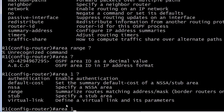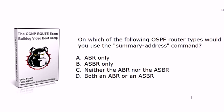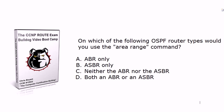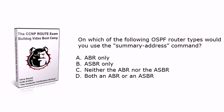The second command, `summary address`, you're going to be using on an Autonomous System Border Router only — an ASBR. So to quickly review: `area range` is used on an ABR; `summary address` is used on an ASBR. I'll show you both of those in action in future videos, and that's on my to-do list.